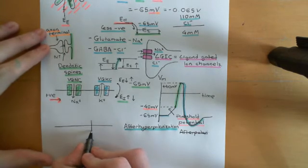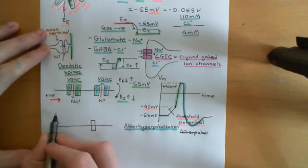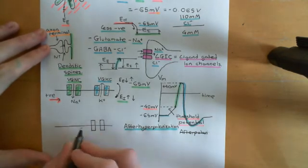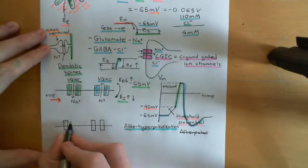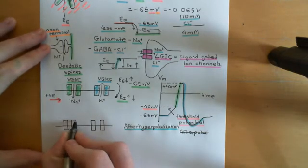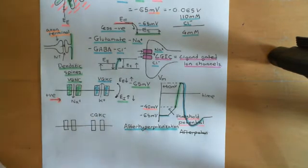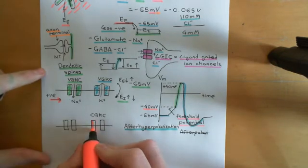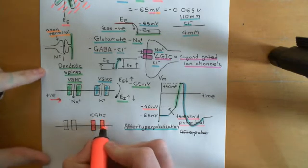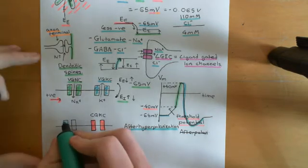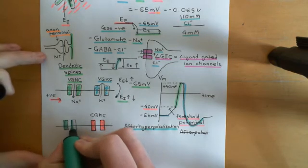Now putting in another cell membrane here — once again, this will be the extracellular side and this will be the intracellular side. I want to talk about two other types of ion channel: firstly, the calcium-gated potassium channels, where C is for calcium — these are going to be opened by intracellular calcium. Some of them are also activated by depolarization, but we'll dwell on the ones that are opened by calcium. The other ones that are going to be important here are the voltage-gated calcium channels.